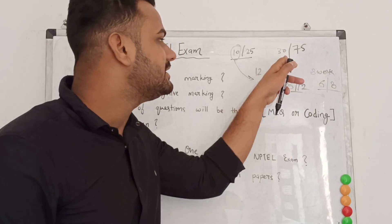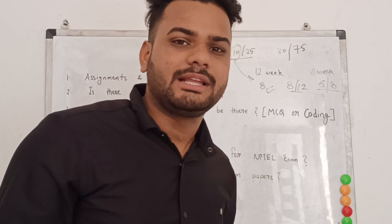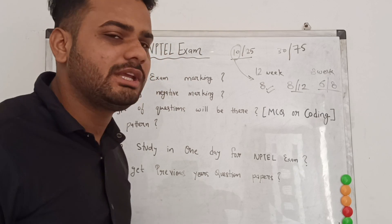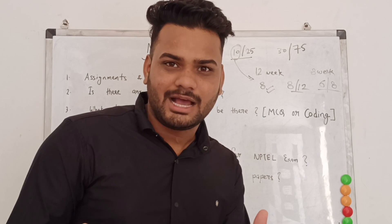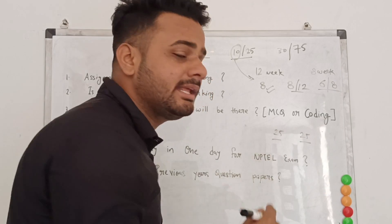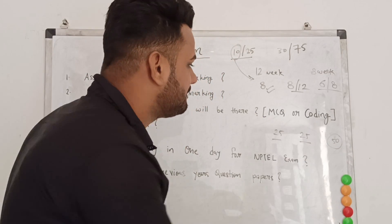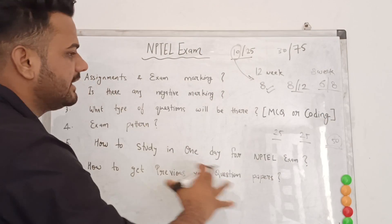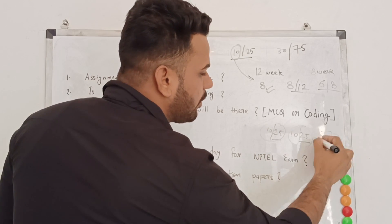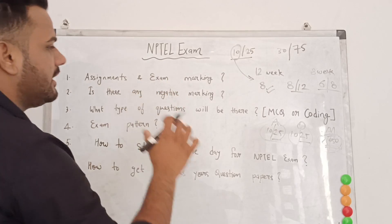For programming-related courses — like Java, Python, C++, or DBMS — there is an additional online programming exam worth 25 marks. So the breakdown is: 25 marks for assignments, 25 marks for the online programming exam, and 50 marks for the main exam at the center. In this case, you need 10 out of 25 in assignments, 10 out of 25 in the online exam, and 20 out of 50 in the main exam.